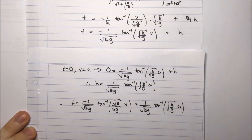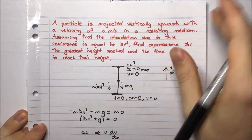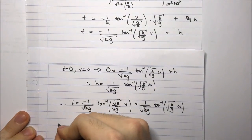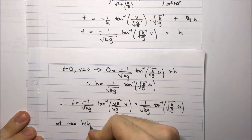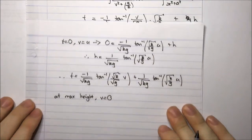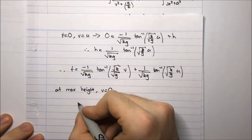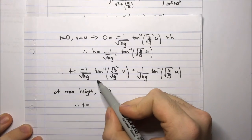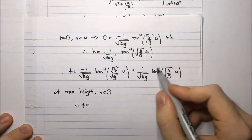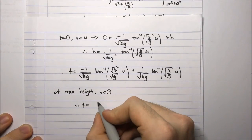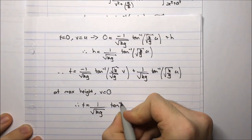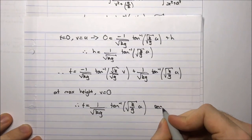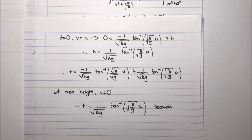The question asks for the time taken to reach the maximum height. At maximum height, v equals 0. Substituting v equals 0: tan inverse of 0 is 0, so that term vanishes. The expression for the time to reach maximum height is therefore t equals 1 over the square root of kg times tan inverse of (square root of k/g times u). That is the final answer for the second part of the question.